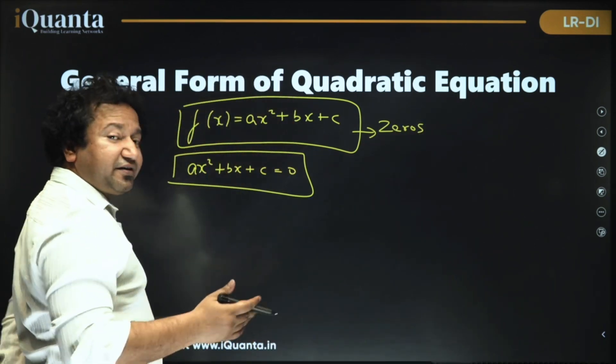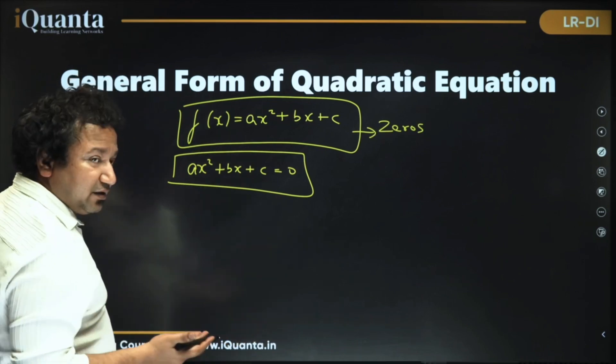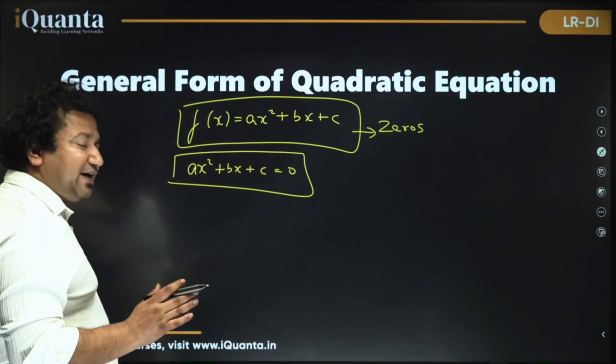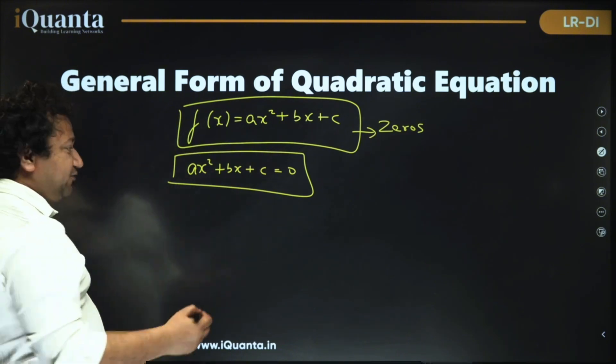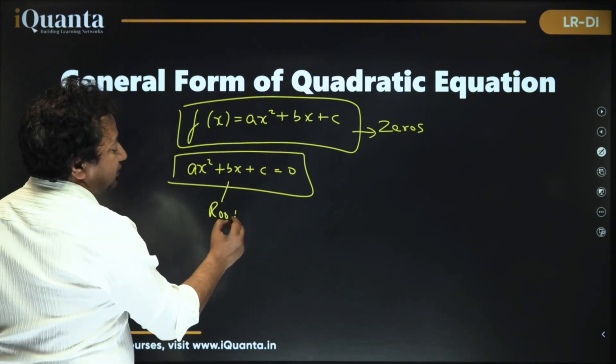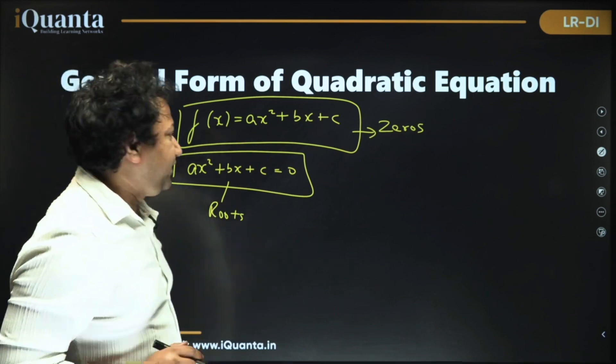The moment we transform it to an equation that means we need to have the values of x for which this entire expression becomes equal to 0. Those values are known as roots. Okay two things that we have understood.